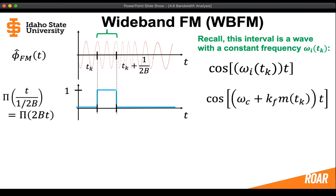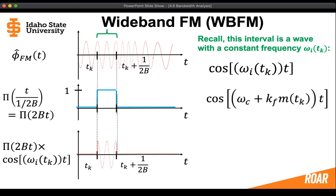Expressed using the carrier frequency, it will look like a cosine wave. So if we multiply those two together, we're going to get a rectangular box multiplied by our approximate frequency modulated signal, giving us a signal that is zero everywhere except for the interval from tk to tk plus 1 over 2b, where we have a cosine wave with an instantaneous frequency given by the height of the message based on our step function.